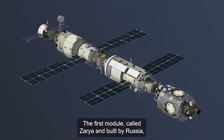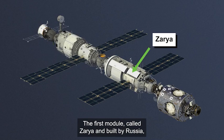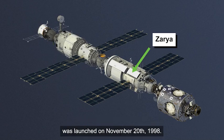The first module, called Zarya and built by Russia, was launched on November 20, 1998.